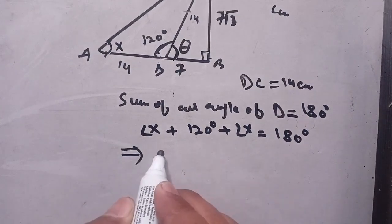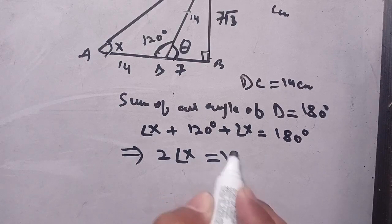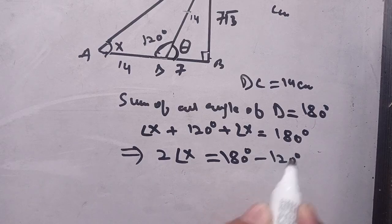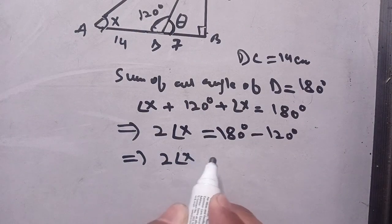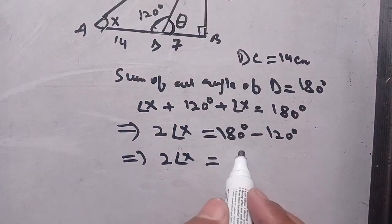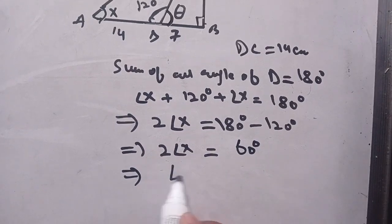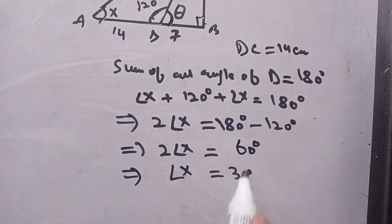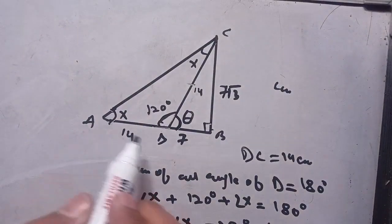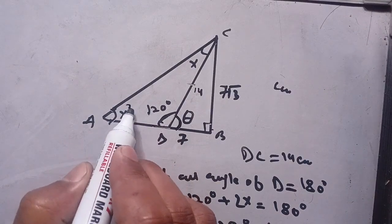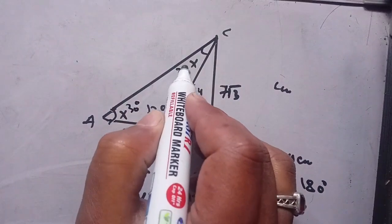Angle x plus angle x gives 2 times angle x equals 180 minus 120, which gives 2 times angle x equals 60 degrees. Dividing both sides by 2, we get angle x equals 30 degrees. Thus angle x is 30 degrees, which means angle DAC equals 30 degrees and angle ACD also equals 30 degrees.